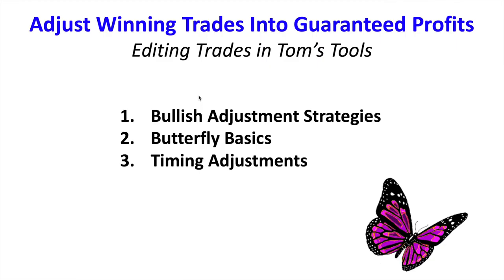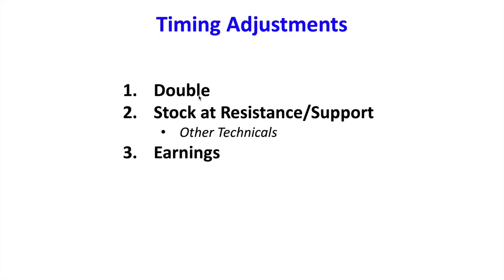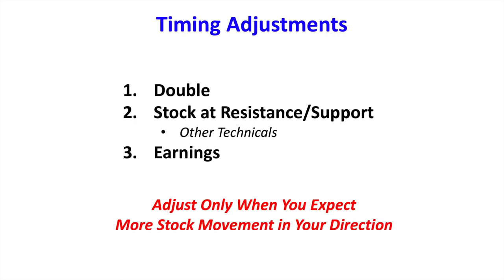The next question you should ask is: when do I make these adjustments? There are no absolute rules of thumb, but here are three good times. First, if you've doubled your money or more, consider adjusting into a bull call spread or butterfly if you're directional. Second, other technicals like moving averages and indicators are also good triggers. Third, earnings — it's never really a good idea to hold over an earnings announcement if you're directional, but if you want to protect yourself, this type of adjustment makes a lot of sense. Only adjust when you expect the stock to continue moving in your direction. Adjustments are all about locking in profit, reducing risk, and even eliminating risk.